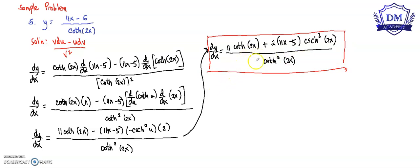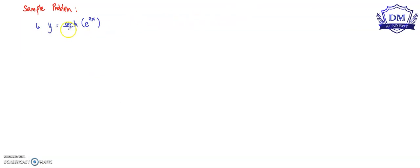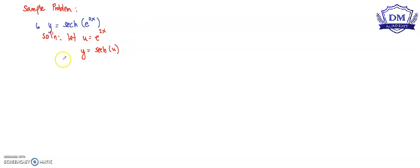Let's have another problem. The function y is equal to the hyperbolic cotangent of e raised to 2x. We will let u be equal to e raised to 2x, so our function y is now the hyperbolic cotangent of u. Using the chain rule, dy/dx equals the derivative of y with respect to u, multiplied by the derivative of u with respect to x.